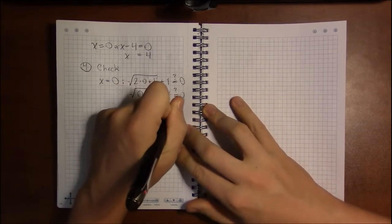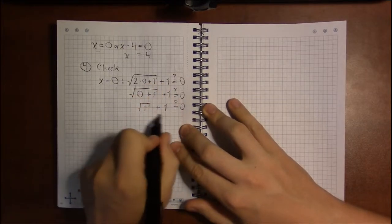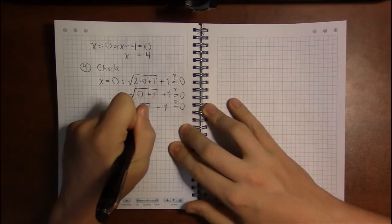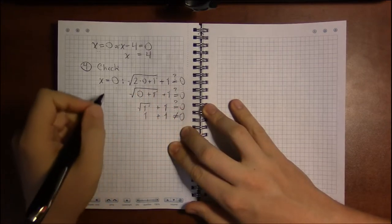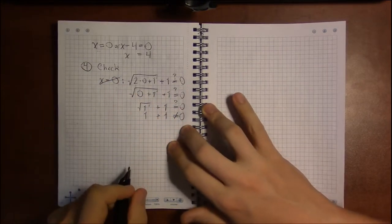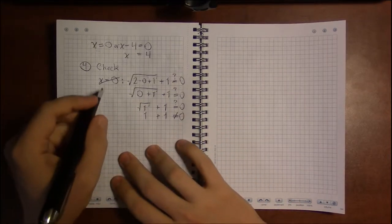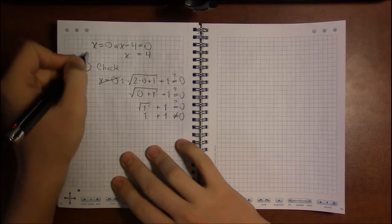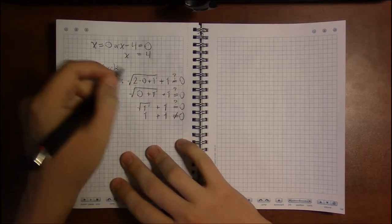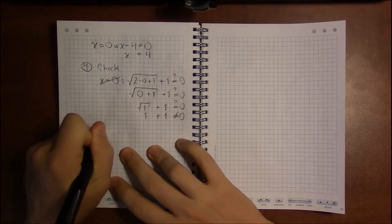And perhaps you can already see, we're not going to get 0. This is 1 plus 1, and that is not 0. So x equals 0 is not a solution. That's an extraneous solution. It's a solution we got introduced by our method of solving, but doesn't actually solve the original problem.